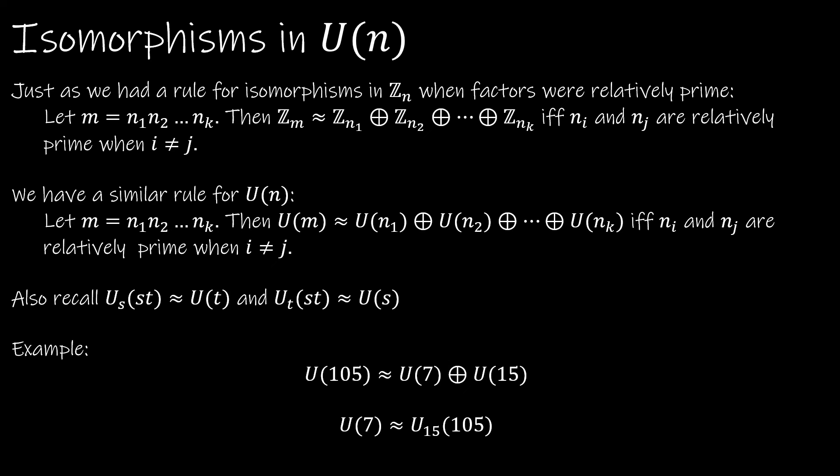We're going to finish up by revisiting isomorphisms in U(n) by revisiting a rule we had for isomorphisms in Z sub n. So if you'll notice, the rules read the same. So we had a rule that said if you have factors that are relatively prime, then you have an isomorphism for those groups.